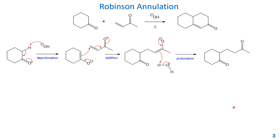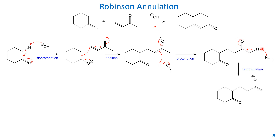Next is the aldol reaction and then aldol condensation. The alpha proton is deprotonated by the regenerated hydroxide again: take the proton, push the sigma electron back to form the pi bond, then break that pi bond and push the electron to the oxygen. That deprotonation gives you an enolate. This is the nucleophile, and this other ketone is the electrophile, so it will undergo an intramolecular aldol addition.